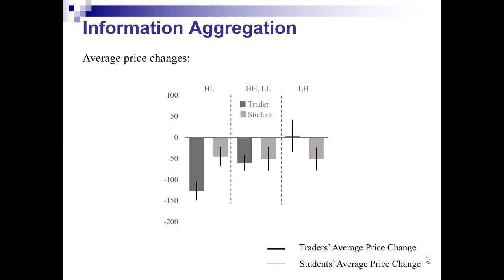In the trader treatment, the results we obtain on average are quite close to the theory, with price changes of approximately 130, 50, and 0. For students, instead, one can immediately see that the average price change is independent of the specific contingency. The conclusion is that traders aggregate private information better than students.